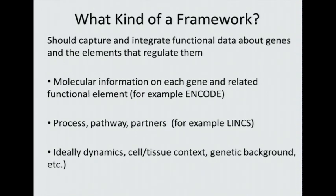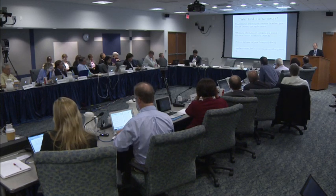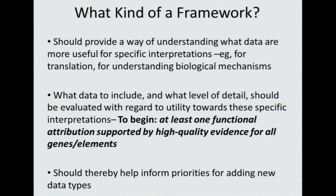We do a bit less of getting process, pathway, and partner data, but there is some — for example, a Common Fund initiative called LINCS. Ideally, we want to include functional information about dynamics, cell and tissue context, genetic background, etc. The framework should provide a way of understanding what data are more useful. This notion of utility came up a number of times in the workshop for specific interpretation — for translation or for understanding biological mechanisms.